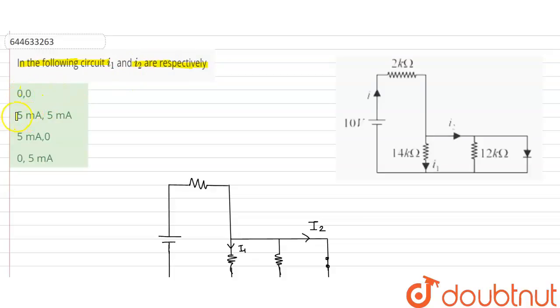Option A: 0, 0. Option B: 5 mA, 5 mA. Option C: 5 mA, 0. Option D: 0, 5 mA.